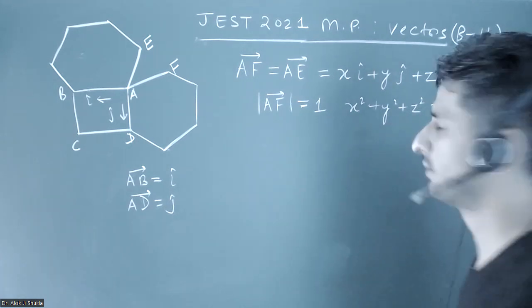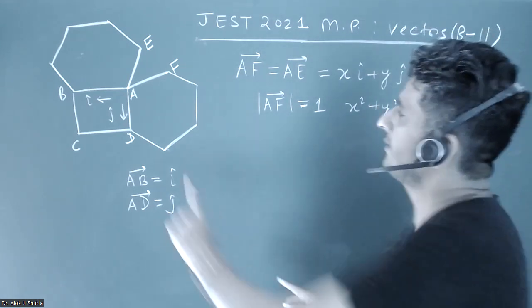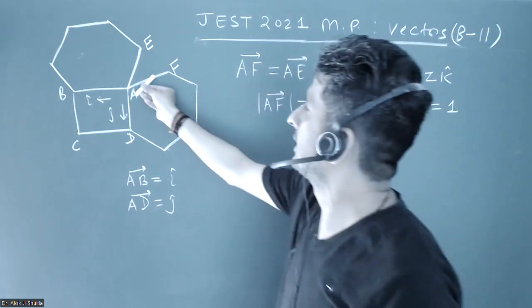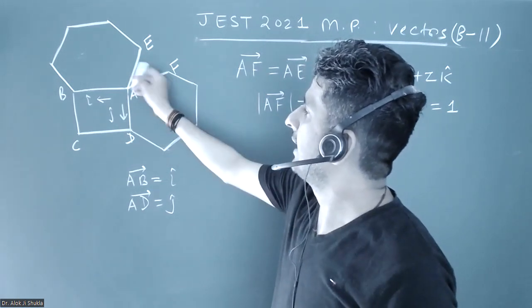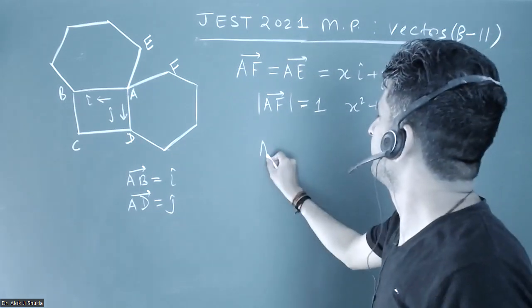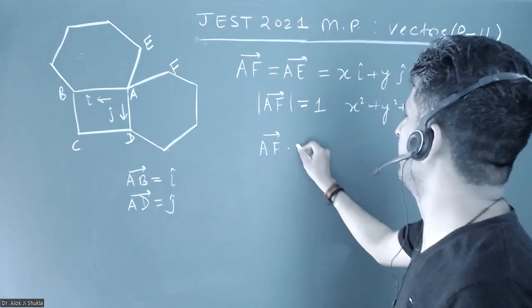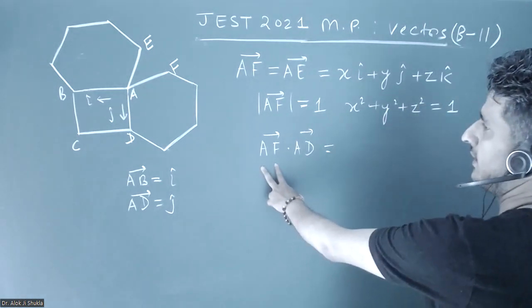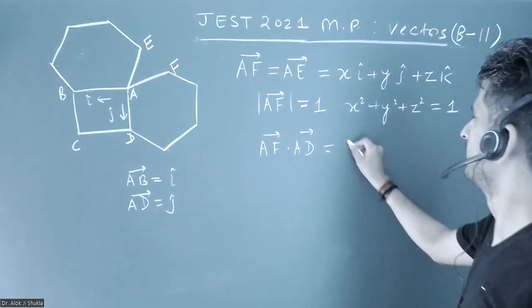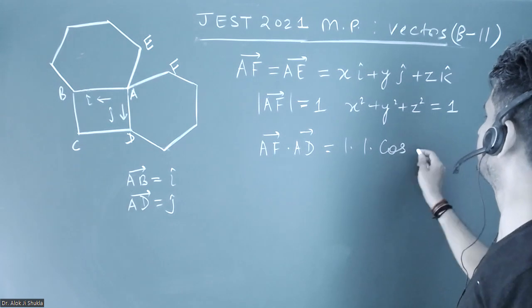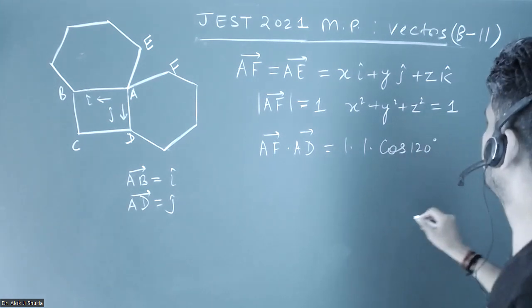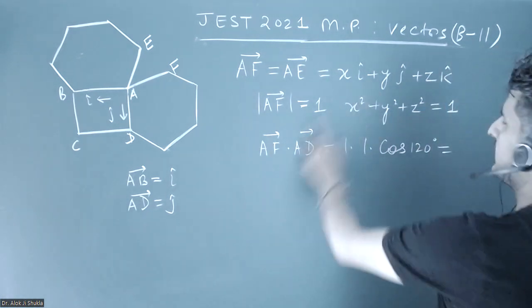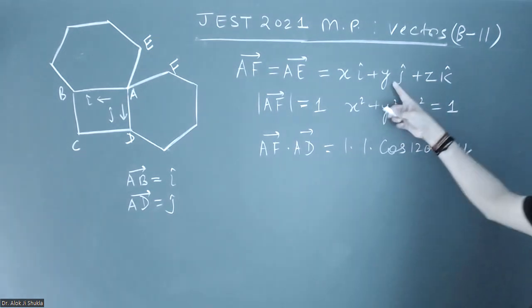Now, if AF vector is lifted like this, I can take the dot product of AF with AD. AF·AD = |AF||AD|cos(120°) = 1 × 1 × cos(120°). Taking AF vector dot AD vector, this equals y, so y = -1/2.